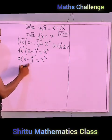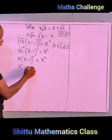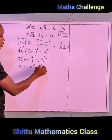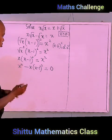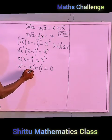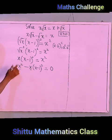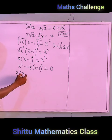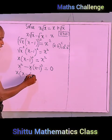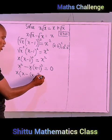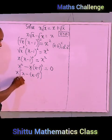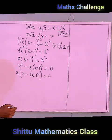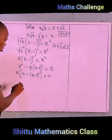Sending all terms to one side, I have x times (x minus 1)² minus x² equals zero. From here, we can factorize: we have x appearing in both terms, so factorizing x out gives us x times [(x minus 1)² minus x] equals zero.